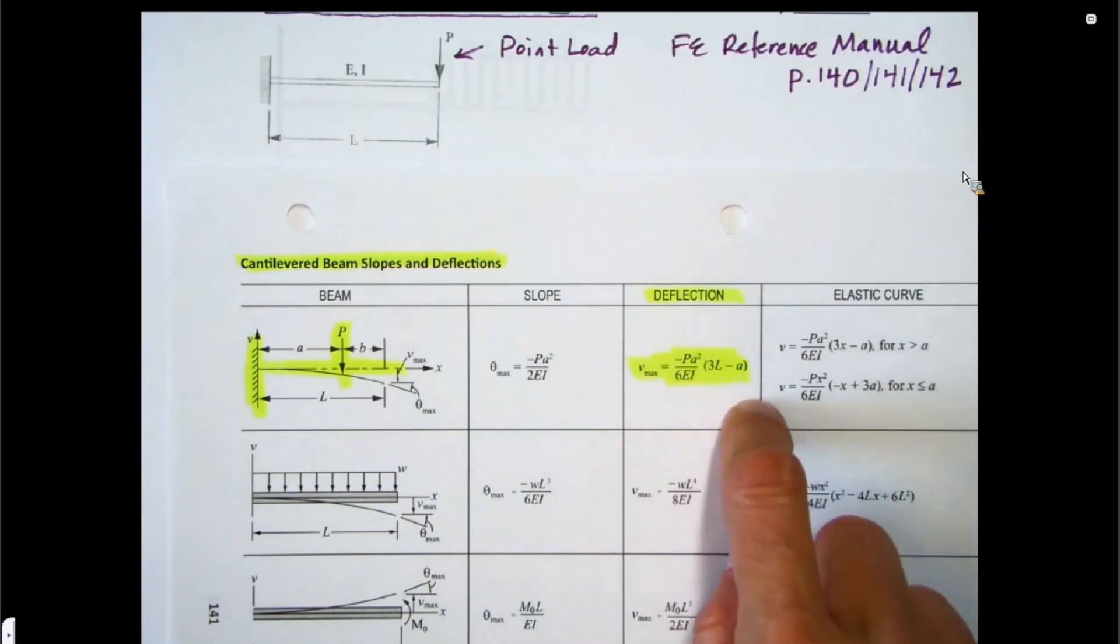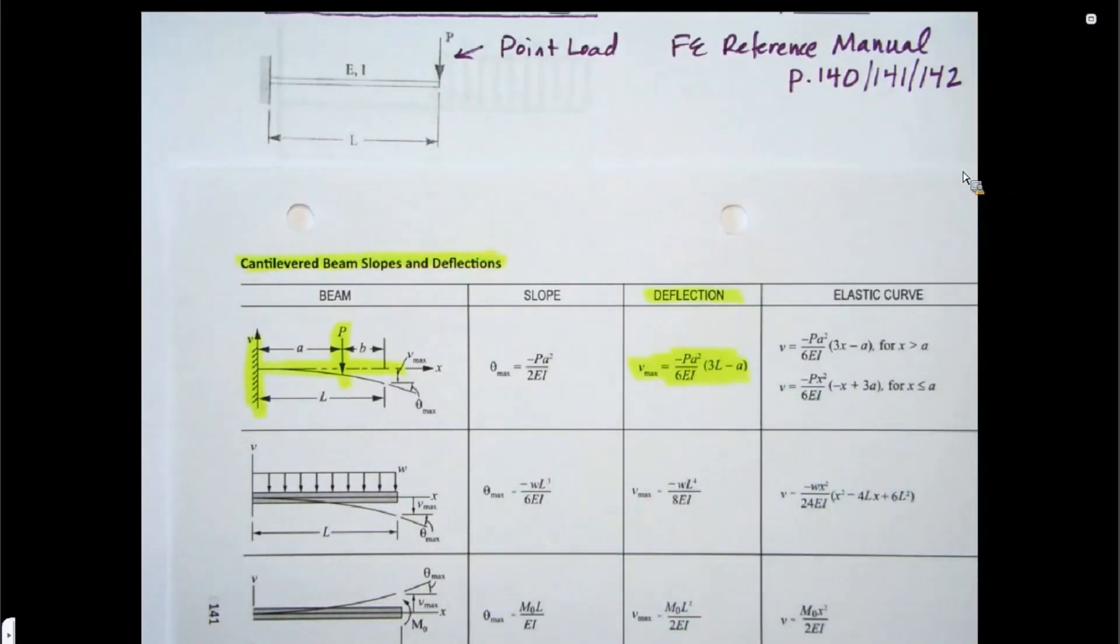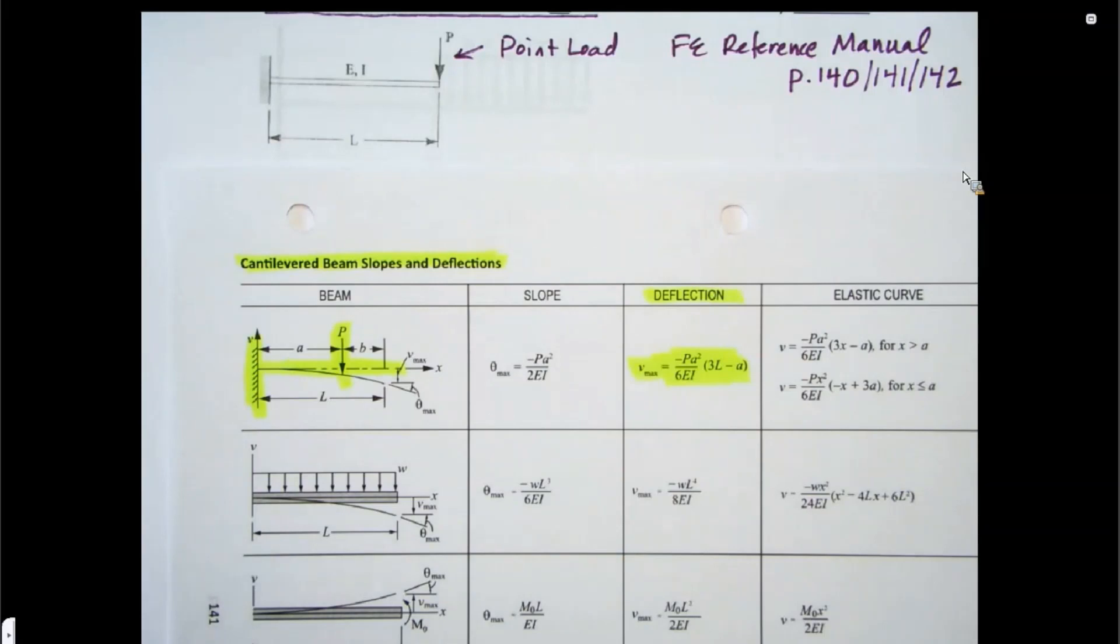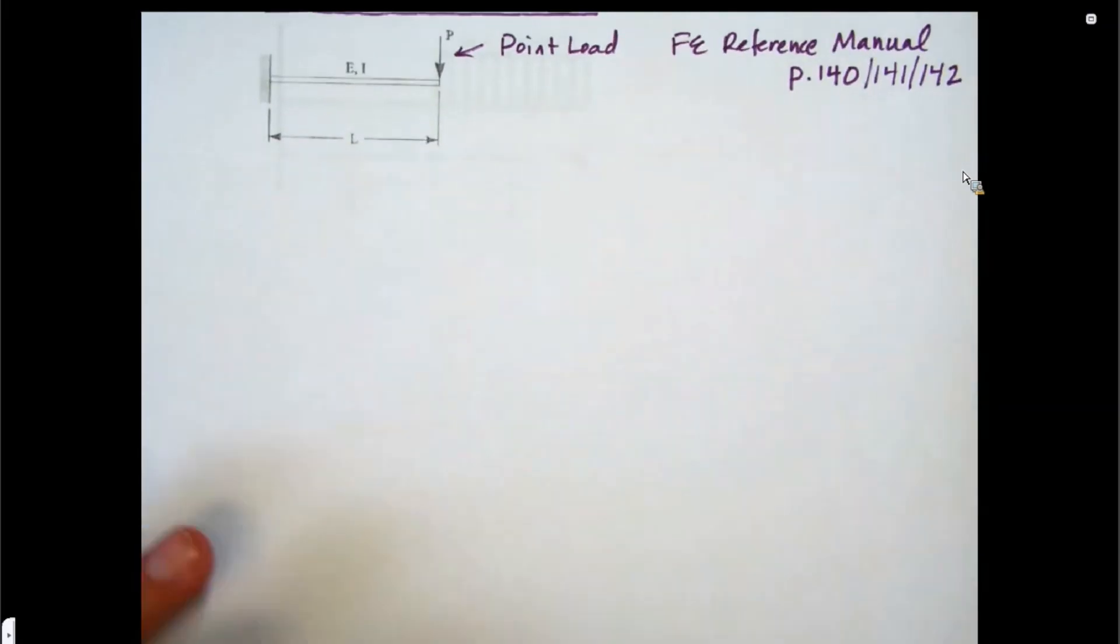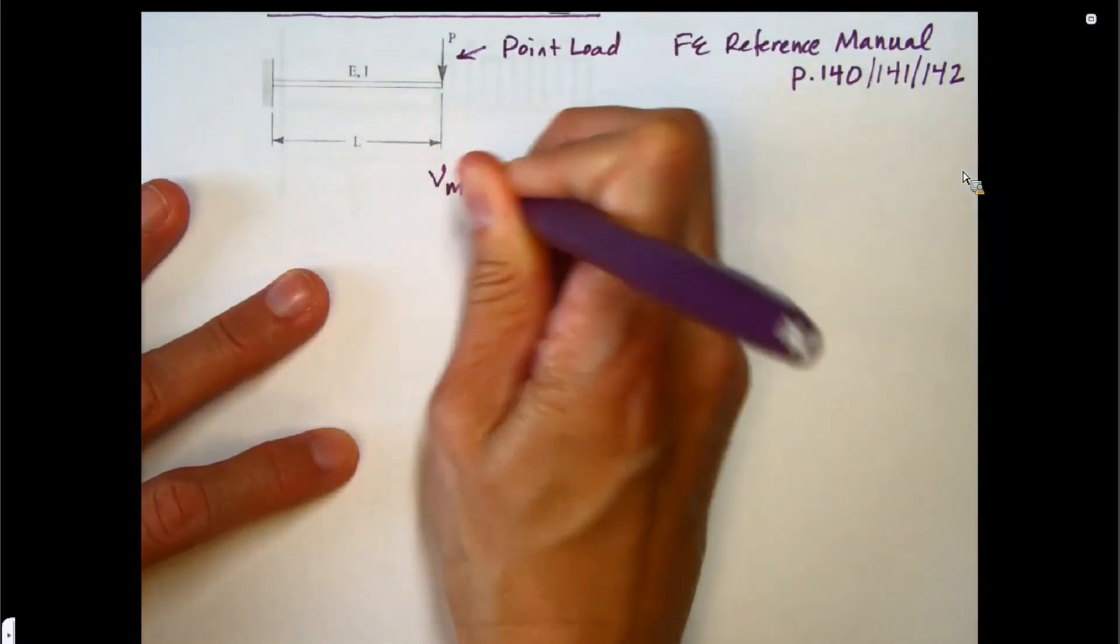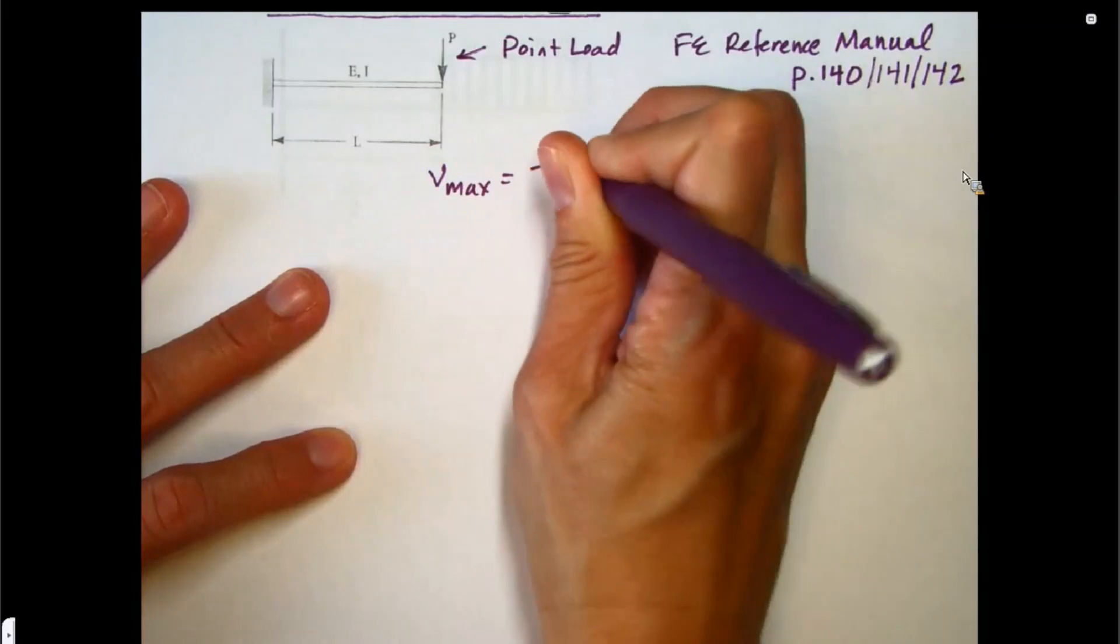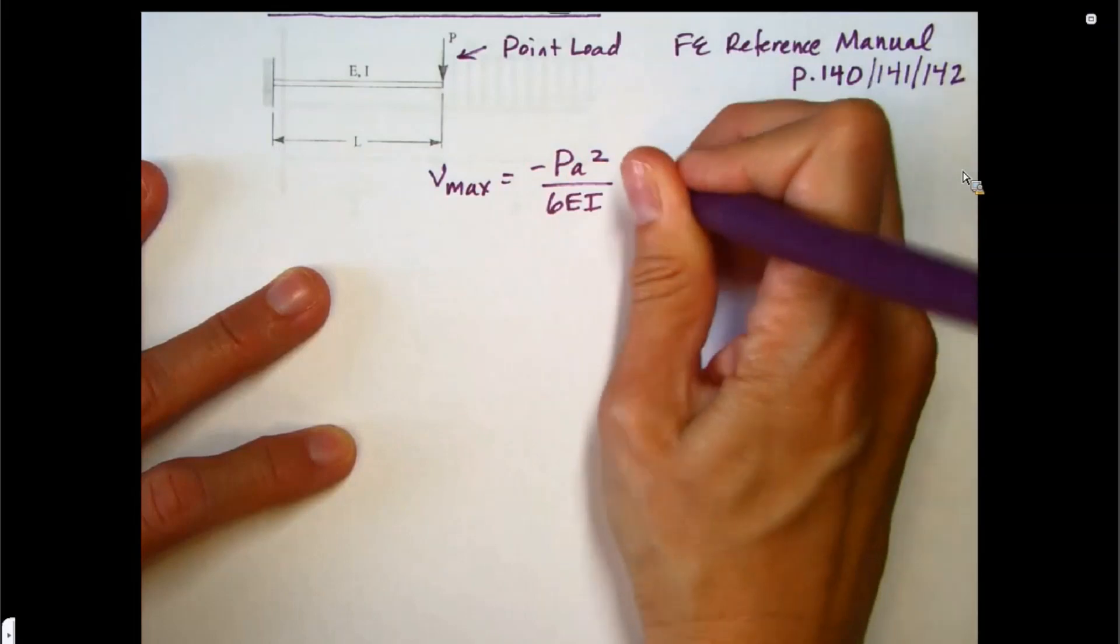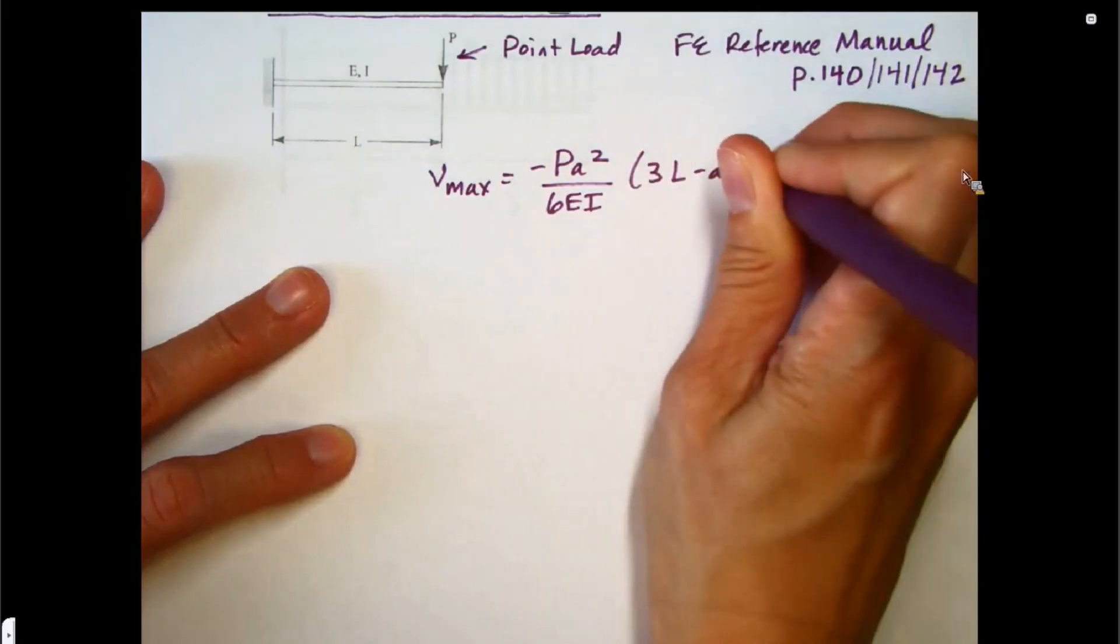So we're going to go ahead and use that formula for deflection. Pull that right off of there that the maximum deflection is going to be minus P A squared over 6EI times 3L minus A. So I'm going to go ahead and write that down to start with.